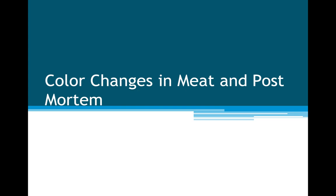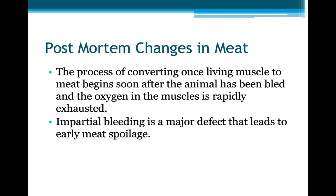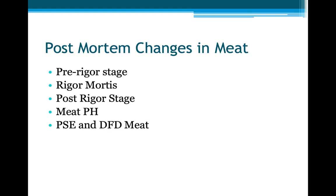Color changes in meat, or postmortem changes: the process of converting living muscle to meat begins soon after the animal has bled out, and the oxygen in the muscle is rapidly exhausted. Incomplete bleeding is a major defect that leads to early meat spoilage. Postmortem changes include the pre-rigor stage, rigor mortis, post-rigor stage, meat pH, PSE, and DFD — stages already touched on in the previous lecture.